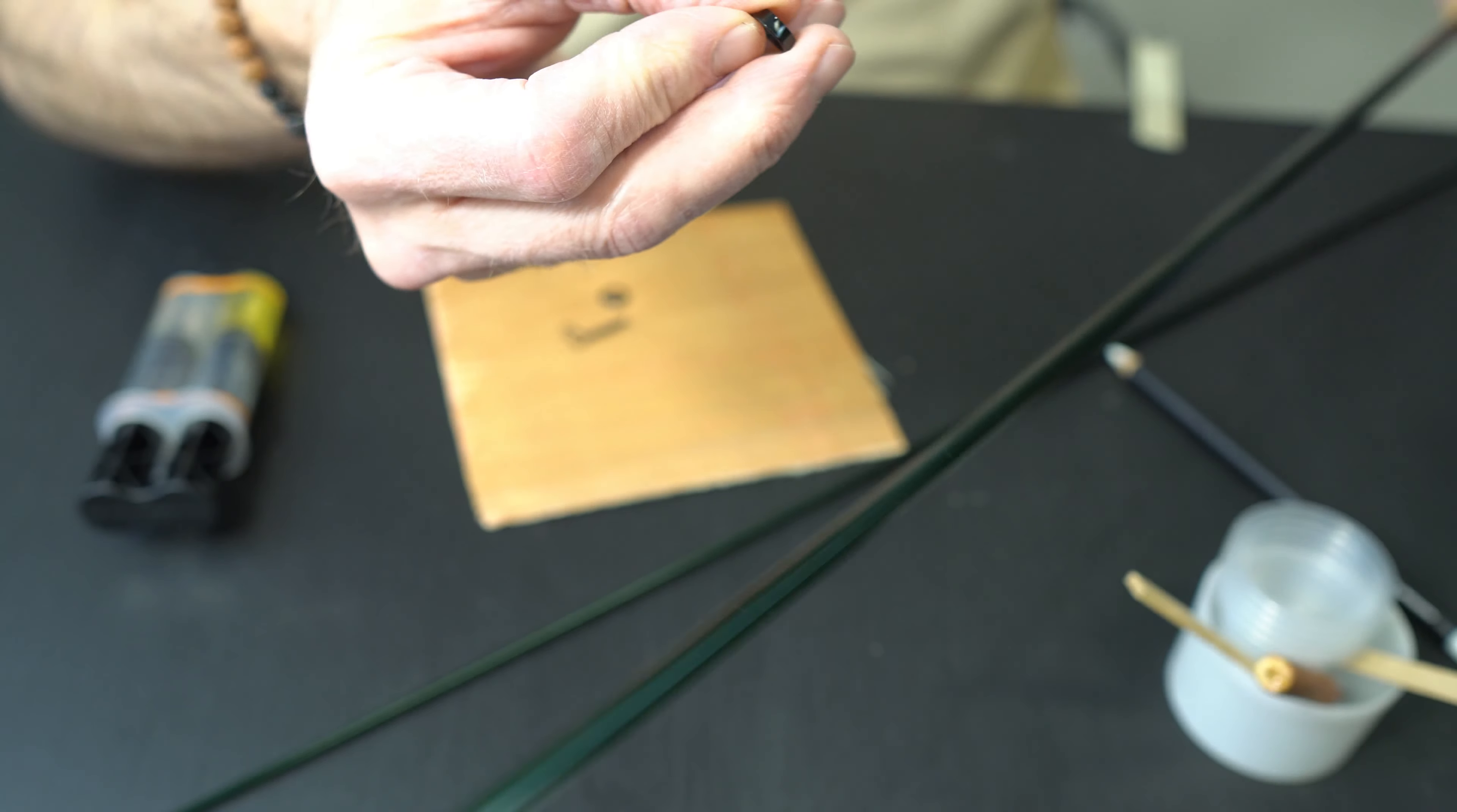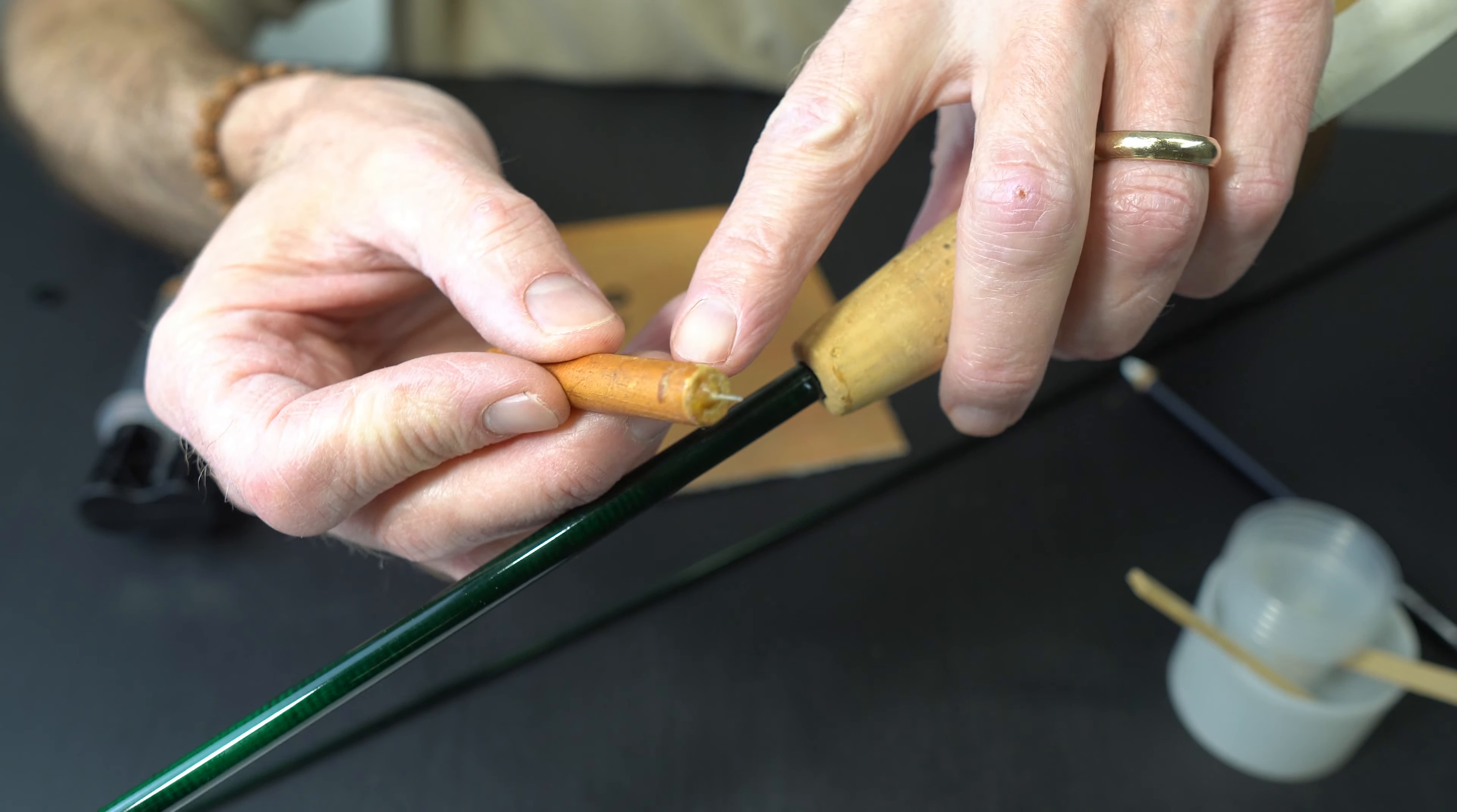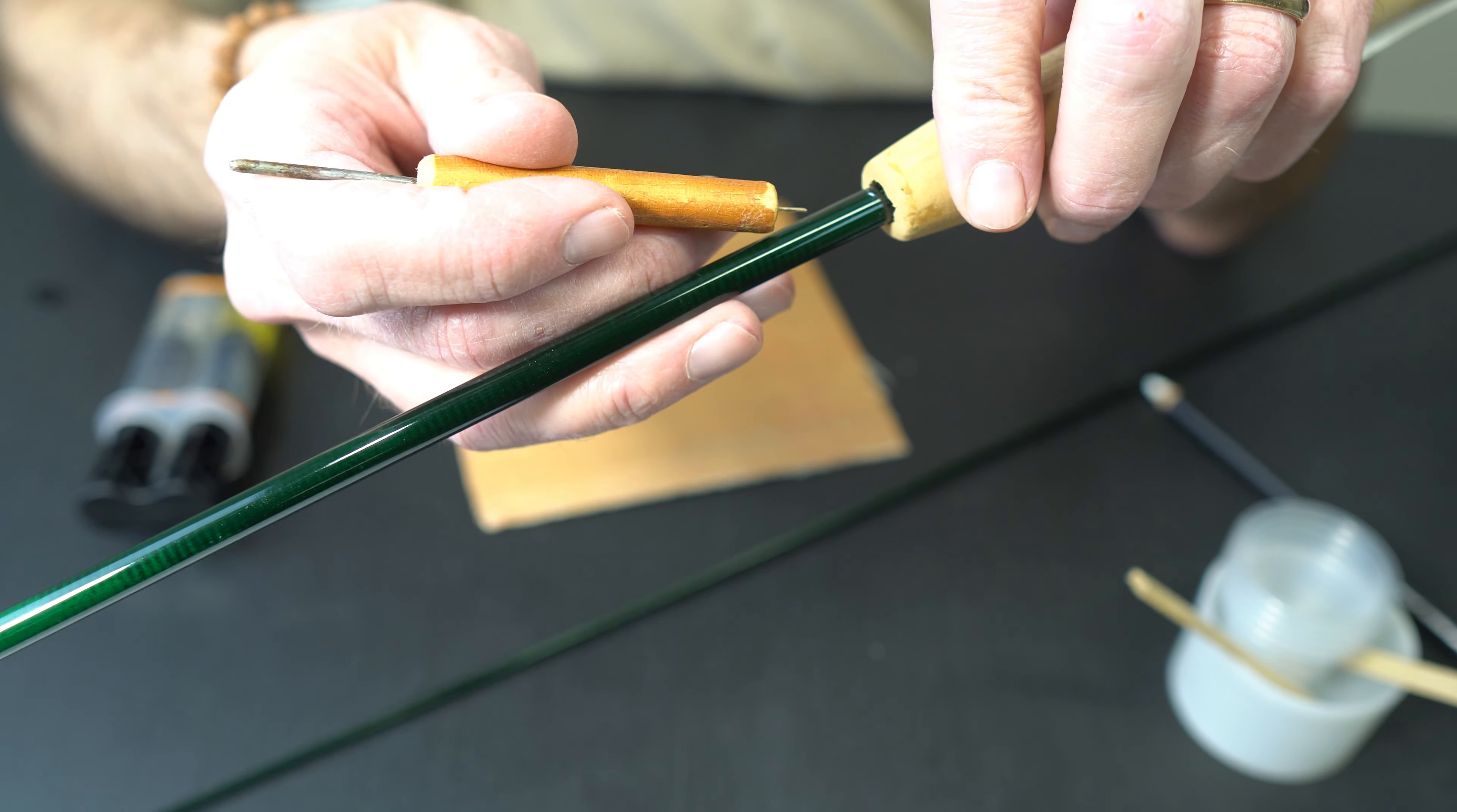Before we glue everything together, let's do a little dry run. That's the winding check right there. It's like a little finish piece that goes right on the rod right here. Let's slip this thing on. That's what it looks like when it's on. I'm going to use a small little tool, it's a dowel I just put a pin into it and clipped the head off, and I use that to just dab a little bit of glue into that area.